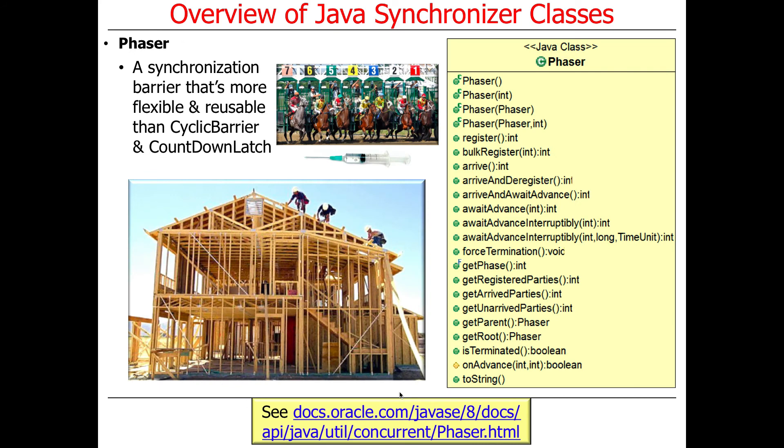There's also something called a Phaser, which is a synchronization barrier that's more flexible and reusable than either a CyclicBarrier or a CountDownLatch. You can end up with dynamic numbers of parties or threads. The analogy I use is building a house — you may have teams of specialists variable in number: six roofers, 20 framers, three plumbers. Those groups descend and work together on a portion of the problem for a while. The groups are dynamically sized — roofers are not the same as carpenters or plumbers. So that's the Phaser.